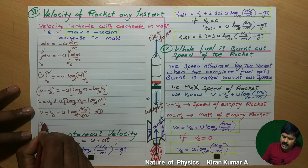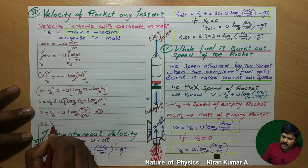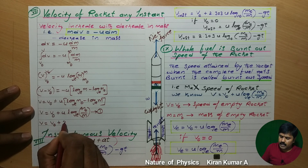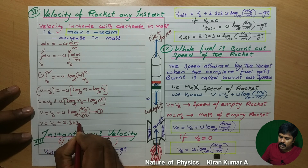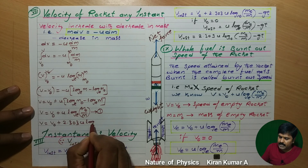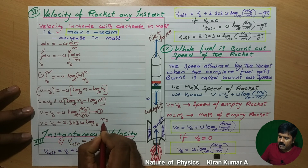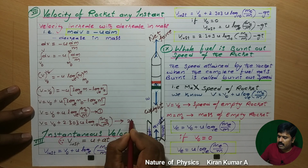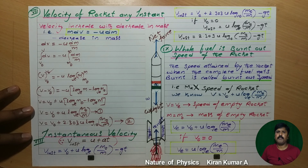Converting to log base 10: v = v₀ + 2.303·u·log₁₀(m₀/m). This is equation 2. Clear information is given about the velocity.